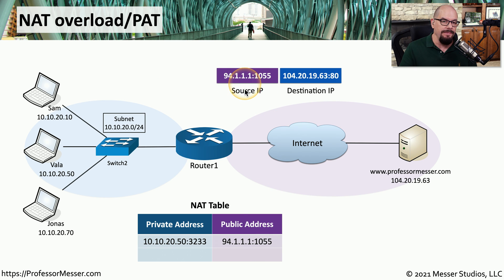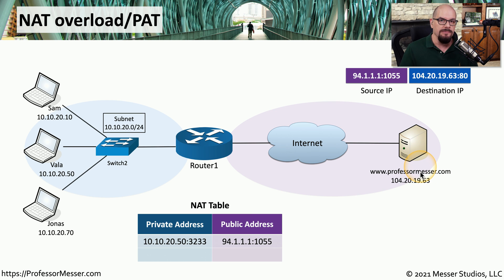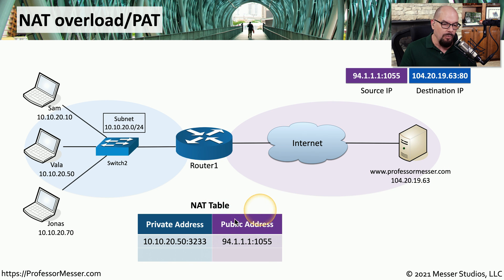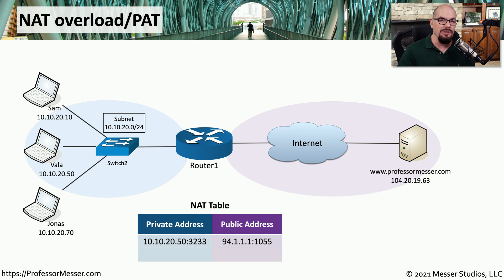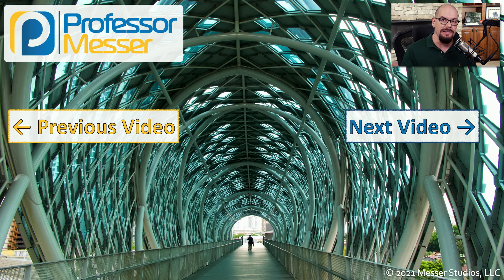As with our previous example, when the Professor Messer web server wants to send information back to VALA, it reverses the IP addresses. When those addresses are received by the router, the router looks up what address has been received over that port number, translates it back to our internal IP address, and sends that traffic to VALA's workstation. This is a process that occurs millions of times a day across all of the routers connected to the internet. If you're using a router at home or at your place of business, it's performing this NAT overload or port address translation to provide network communication.